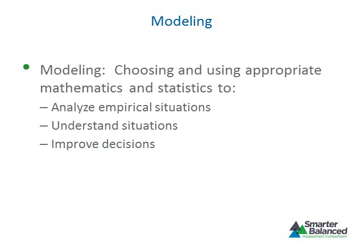The next conceptual category is modeling. According to the Common Core State Standards for Mathematics, modeling is the process of choosing and using appropriate mathematics and statistics to analyze empirical situations, to understand them better, and to improve decisions. Modeling is best interpreted not as a collection of isolated topics, but rather in relation to other standards. Making mathematical models is a standard for mathematical practice for grades K through 12. Specific modeling standards appear throughout the high school standards and are indicated by a star symbol in the Common Core State Standards.